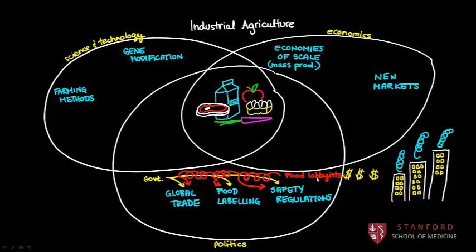Let's define some of these innovations. In the 1800s, elements like nitrogen, phosphorus, and potassium were identified as stimulating growth in plants, and these became the beginning of what we know as fertilizer. Then in the 1900s, vitamins were discovered and isolated, and found to be responsible for growth and maintenance of health in animals.